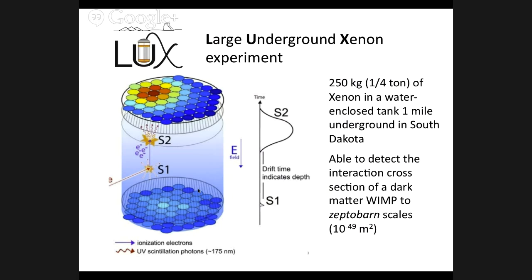Weakly interacting means it's not interacting through electromagnetic interactions — that's why there's no light. But they might interact through the weak force. There are predictions that if a WIMP collides with certain atoms, it can deflect those atoms through a weak interaction, and that's something you could actually detect. This talk is on one of these experiments called LUX — a beautiful name since it's Latin for light, which is ironically not what they're looking for; they're looking for dark.